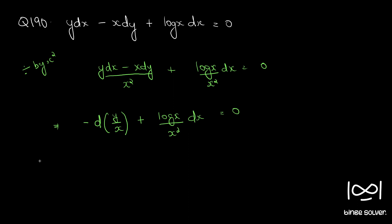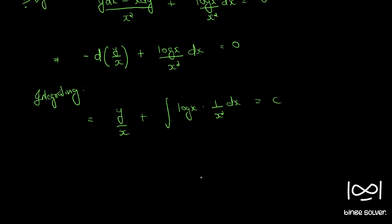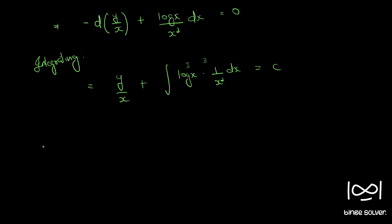Integrating, we have y by x plus the integral of log x times 1 by x squared dx equals c. We will call log x the first function and 1 by x squared the second function, so we will use integration by parts.